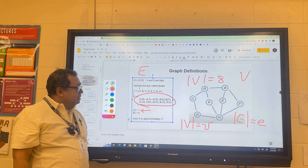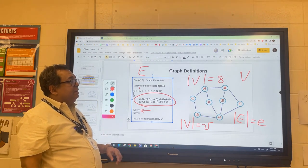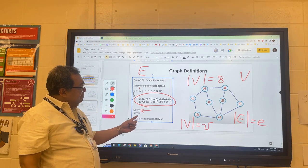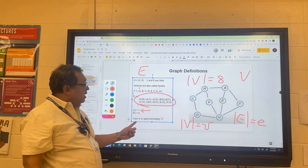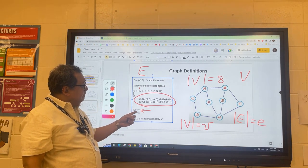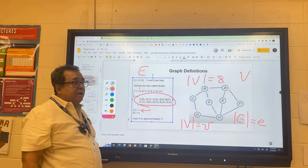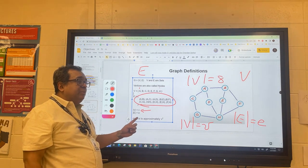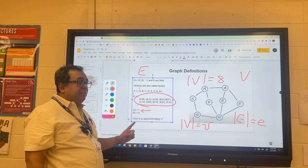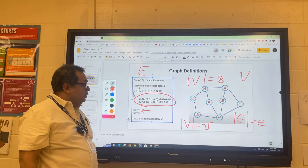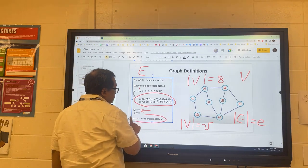Now my question to you is why is it that the maximum number of edges for a graph that has v vertices, why is that approximately v squared? This has something to do with something we have already learned last time we were together. I would like you to discuss with your partner where does this relationship come from.